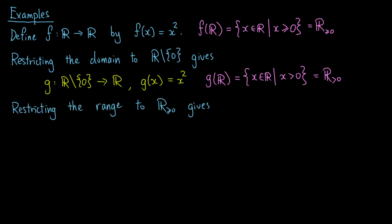On the other hand, if we restrict the range of f to the set of non-negative real numbers, we have a function, say h, from the real numbers to the set of non-negative real numbers, defined by h of x equals x squared, and in this case, the image of h is the same as the image of f.